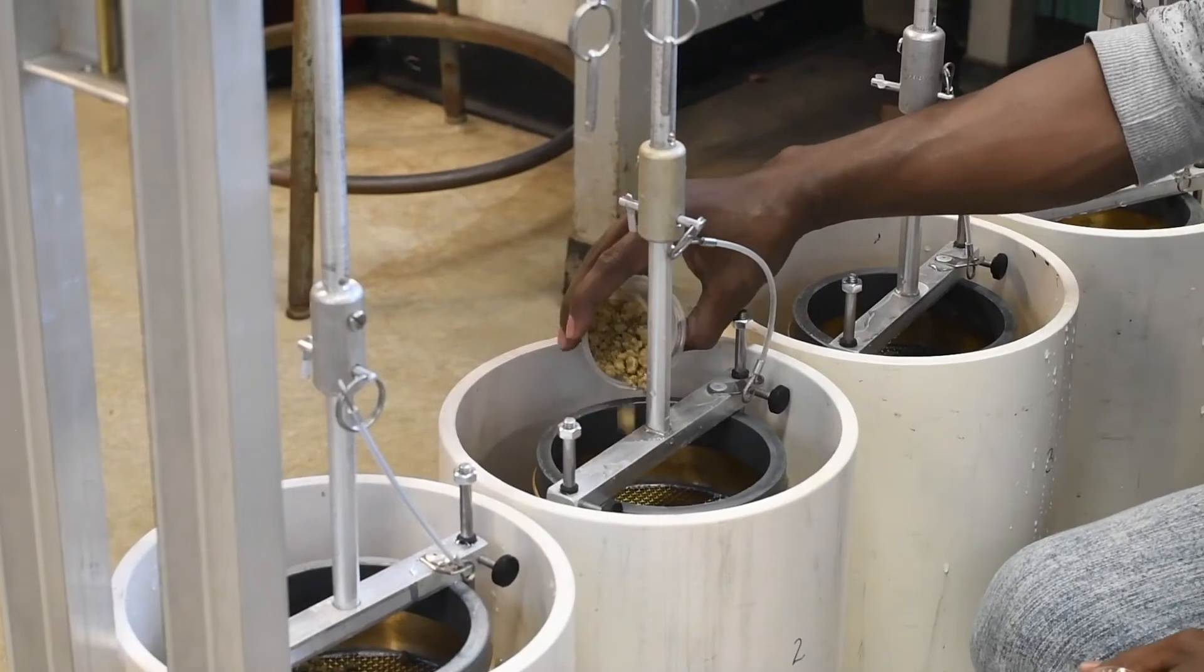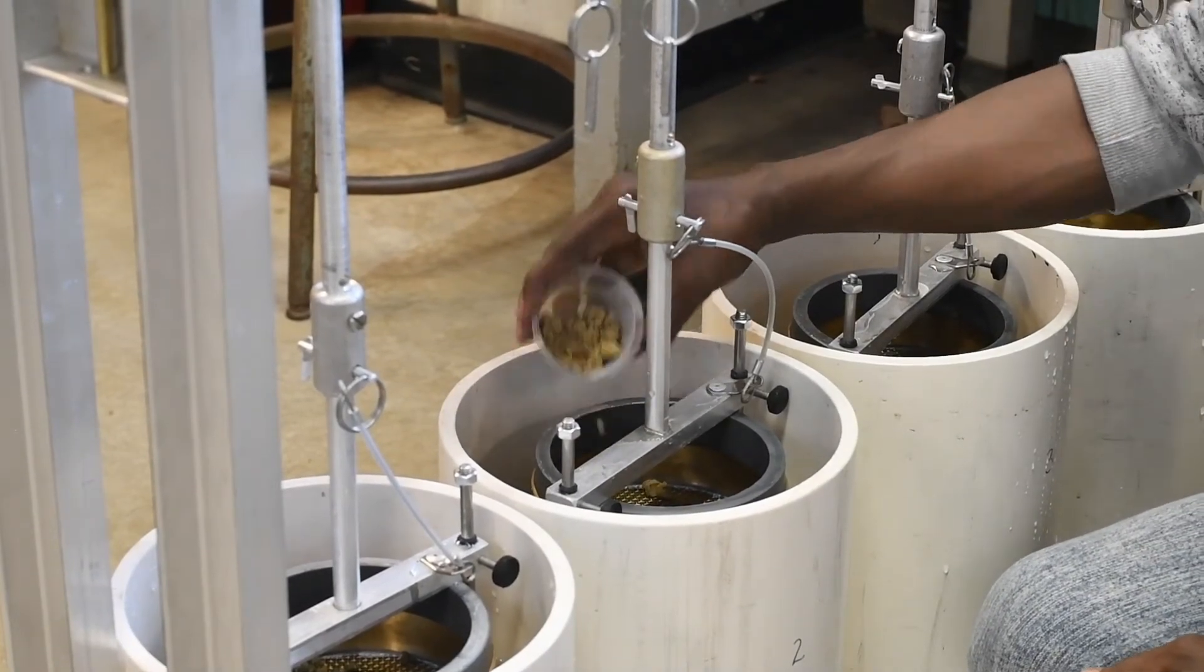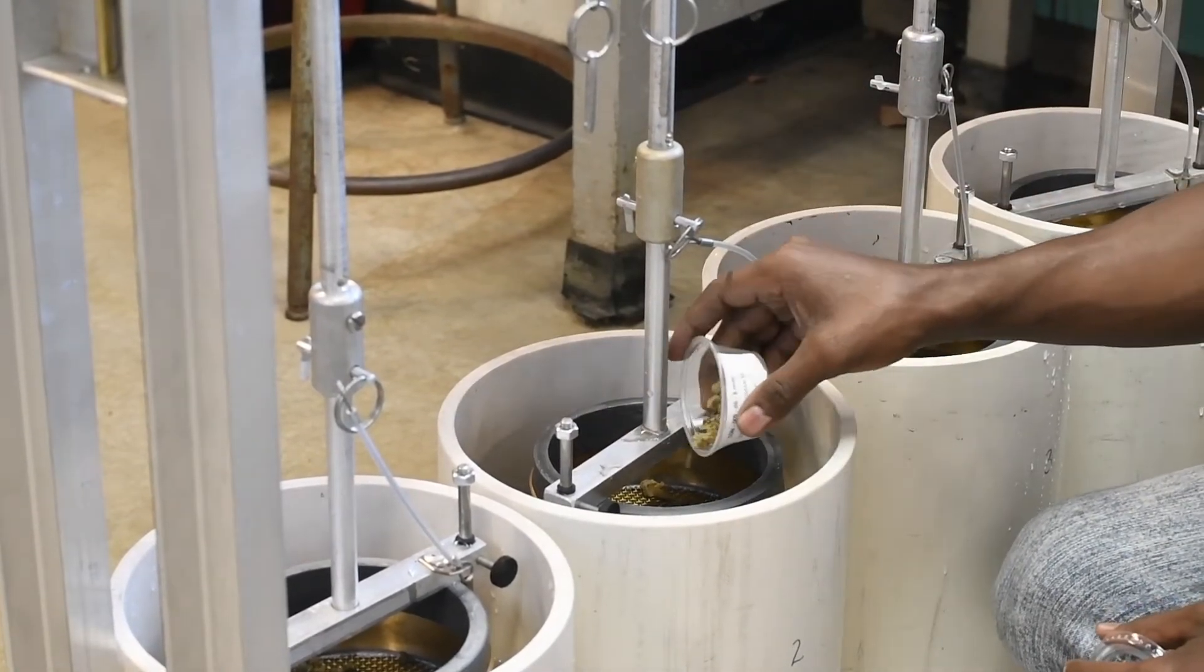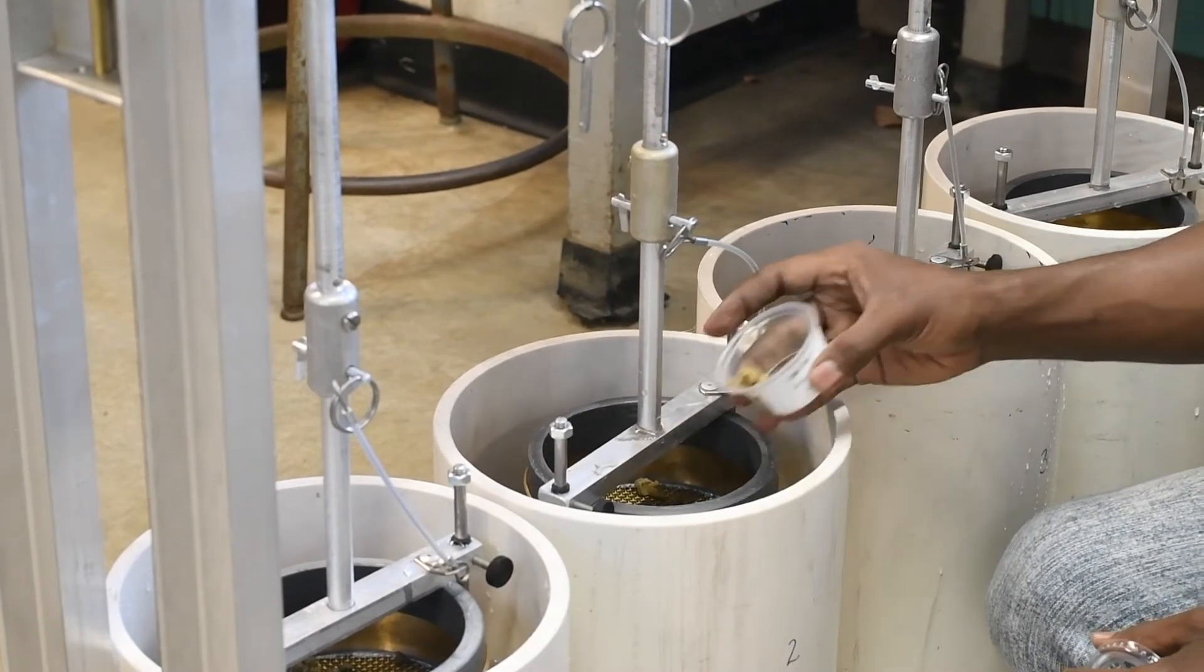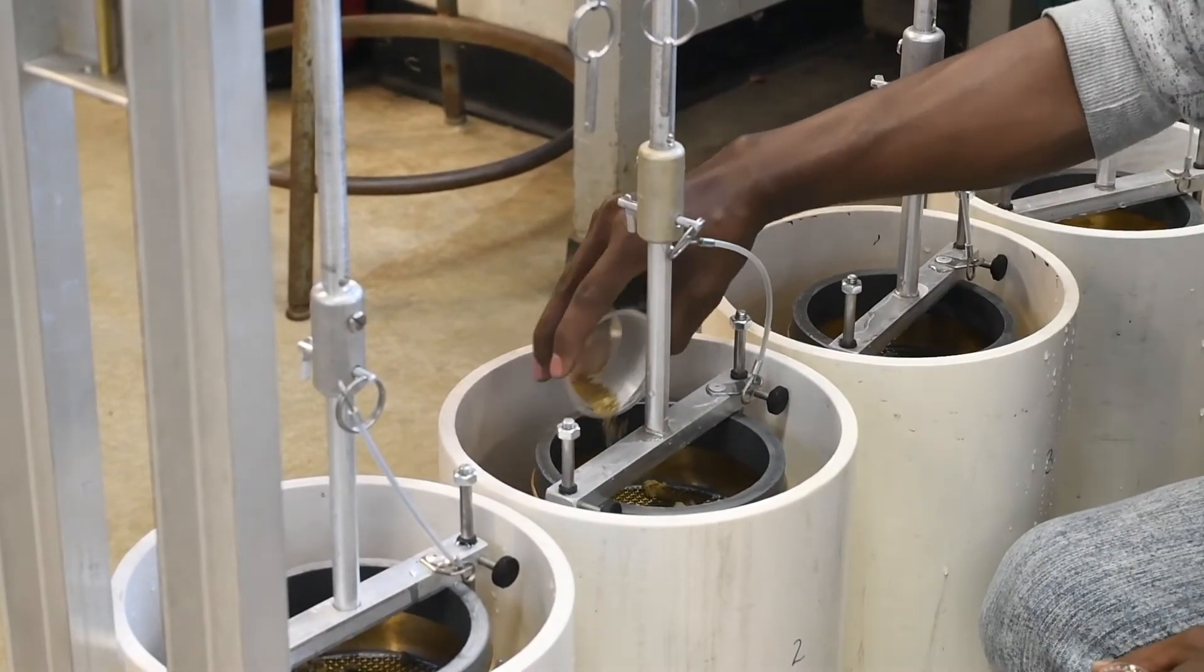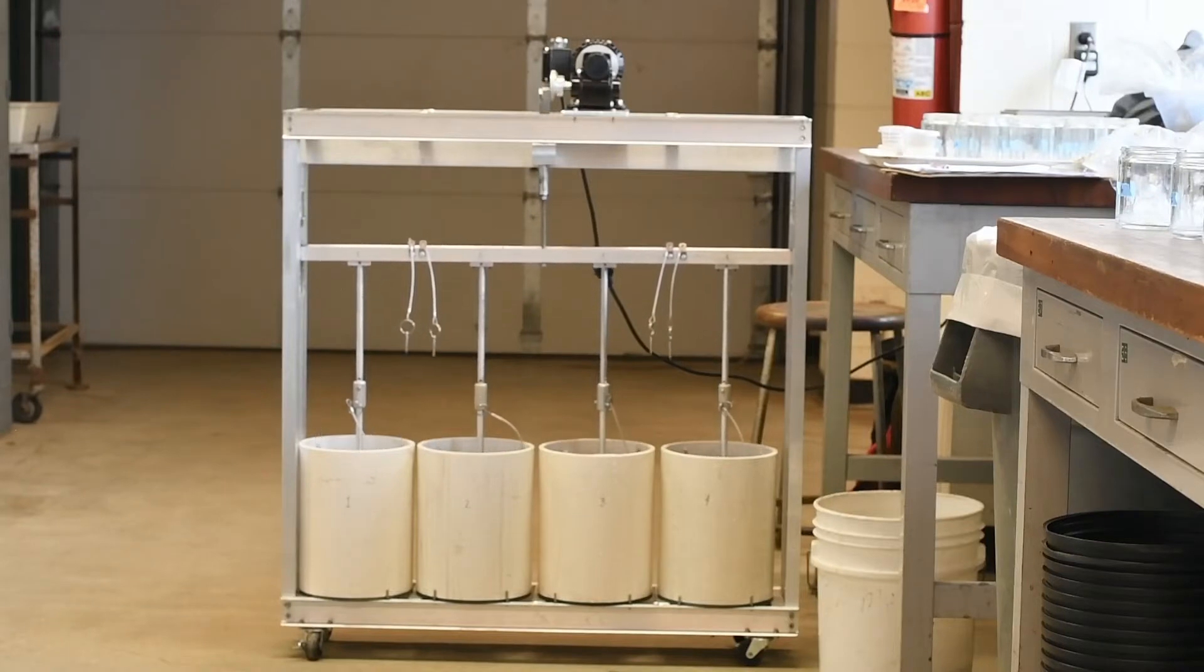When you are ready to run a set of samples, return the device to its highest position. Gently distribute 25 grams of sample across the surface of the top sieve. Hit the switch to start the device and set a timer for five minutes. This time may differ depending on your protocol.